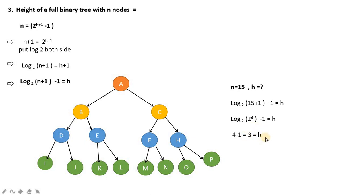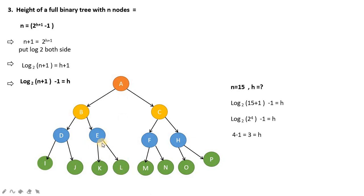Finally, we have h = 3. If we verify this with the example tree, we find the height by counting from the lowest (leaf) node up to the root node, counting edges: 1, 2, 3. So the height is indeed 3, which confirms our formula.